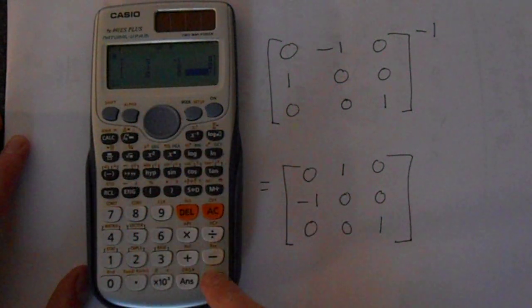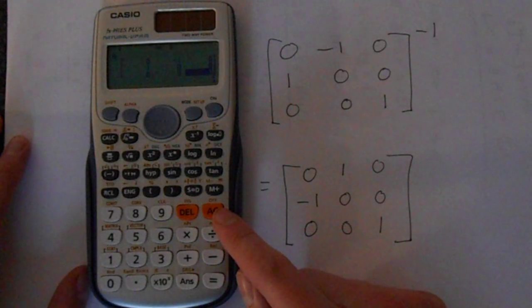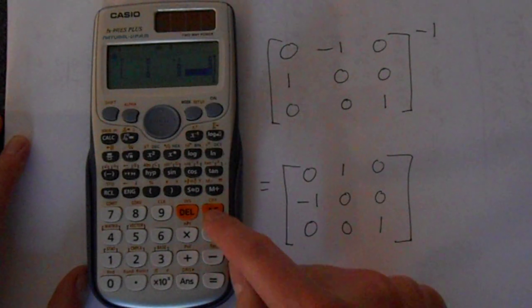You can use the keypad here, and perhaps that's faster. Now we press AC to save. Once we've entered this matrix, the AC button will save it.